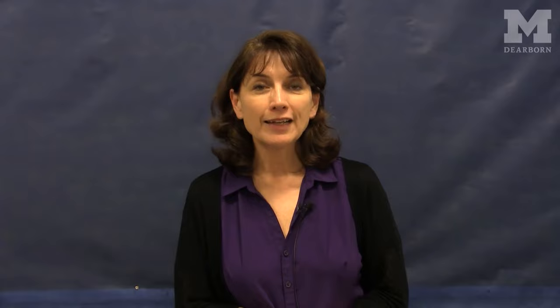Next I want to mention where industrial organizational psychologists work. One location is a university setting — a professor who teaches and does research. There are also a good number of jobs in government, at the federal and state levels, where IO psychologists help with things like selection and managing performance. The military uses a lot of industrial organizational psychologists as well. We also get jobs in industry — usually larger corporations like Ford, General Motors, IBM, PepsiCo, and Procter and Gamble typically hire industrial organizational psychologists.